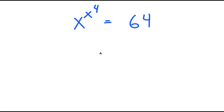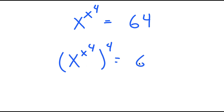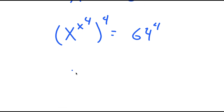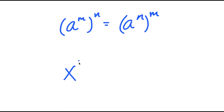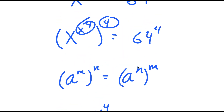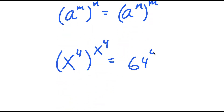For this video, I'm going to be solving the equation x to the power of x to the power of 4 is equal to 64. I'm going to first start by taking the power of 4 on both sides. If I have something in the form a to the power of m to the power of n, this is equal to a to the power of n to the power of m, meaning I can switch the places of x to the power of 4 and 4. So now I get x to the power of 4 to the power of x to the power of 4 is equal to 64 to the power of 4.